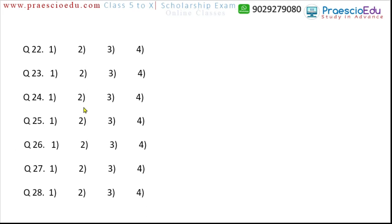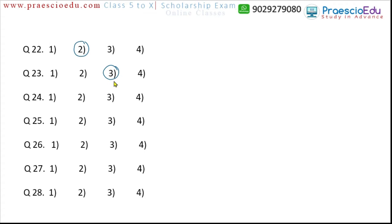Question 22: bed, window, table, chair. Bed, table, and chair all belong to the furniture category, but a window is mounted in a wall. So option two, window, is the different one. Question 23: Independence Day, Republic Day, Gudi Padwa, and Gandhi Jayanti. Gudi Padwa is a religious festival, while the others are national holidays. So option three, Gudi Padwa, is the different one.